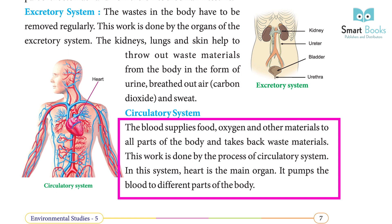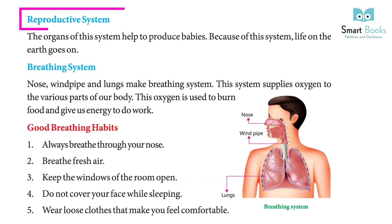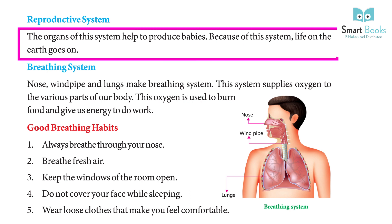Circulatory system: The blood supplies food, oxygen, and other materials to all parts of the body and takes back waste materials. This is done by the circulatory system. The heart is the main organ of this system — it pumps blood to different parts of the body.